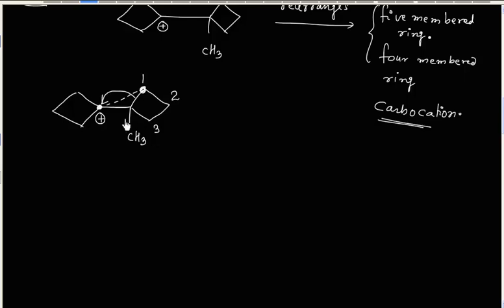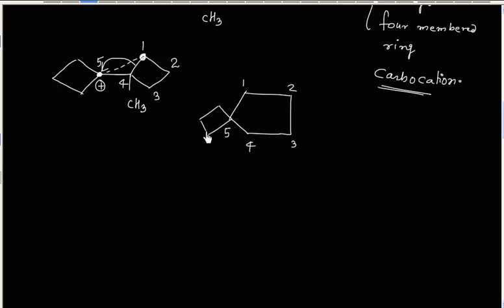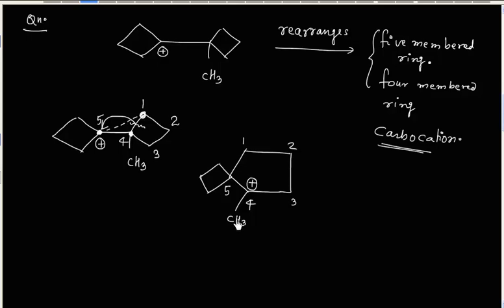Counting the ring: 1, 2, 3, 4, 5 — so on this side we have a 5-membered ring. Carbon number 1, 2, 3, 4, 5. On carbon number 5 we also have a 4-membered ring. Carbon number 4 will have a CH₃ group as well. Carbon number 4 has lost one bond, so it will have a positive charge — this is a 3° carbocation.